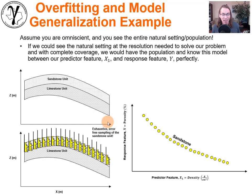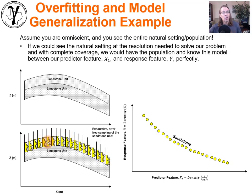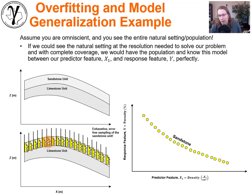Now imagine if you're omniscient — you would be able to observe the entire population of the problem and there'd be no need to model. You would be able to look at all possible locations over the sandstone unit where we perfectly measured the density and the porosity. We'd put every bit of rock through the lab, or you had superhuman vision and could see porosity, which would be epic.